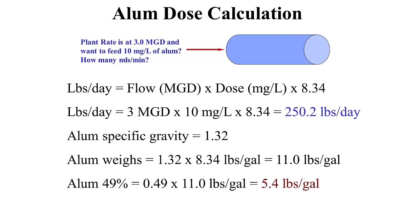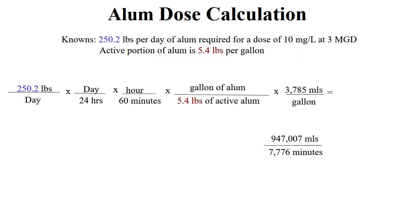Now we need to convert the 250 pounds per day to our specific chemical, which is 49% alum. We multiply the specific gravity of alum, which is 1.32, times 8.34, the weight of one gallon of water, and determine that a gallon of alum weighs 11 pounds. But only 49% of alum is aluminum sulfate, so we multiply 0.49 times 11 to determine that there are 5.4 pounds of aluminum sulfate in a gallon of alum. We know we want to feed 250 pounds per day, and alum has 5.4 pounds per gallon.